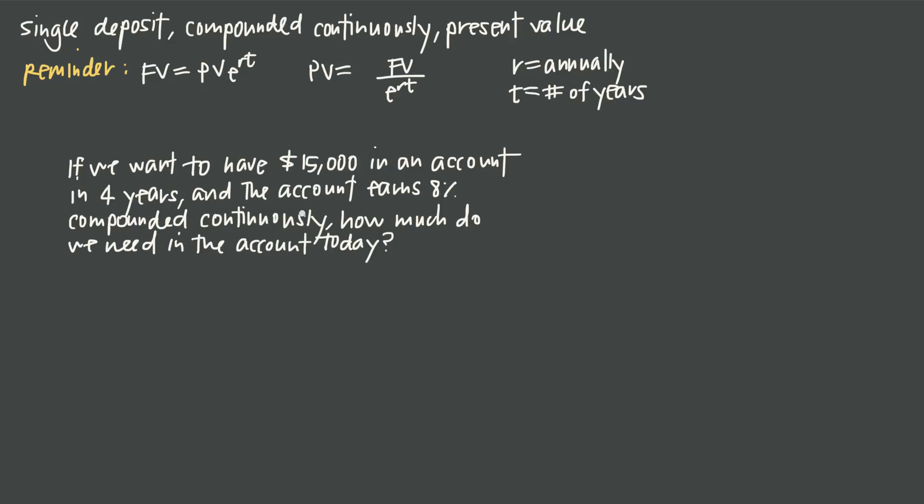So here's our problem. If we want to have $15,000 in an account in four years from now, and that account is going to earn 8% interest compounded continuously, how much do we need to have in the account today in order to get to our $15,000 goal?